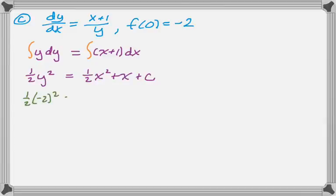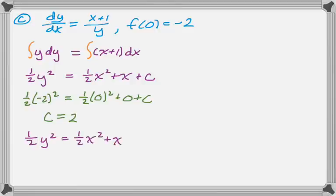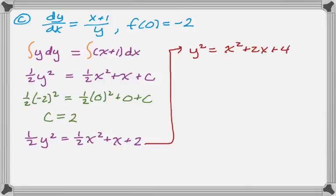I'm going to solve for c right now. So 1/2 times negative 2 squared, and then x is 0, which is nice. So that gives us c equals 2. Let's replace that. So we're just rewriting here. Now what I'm going to do is I'm going to clear out the denominator. So I'm going to multiply by 2 to get y squared equals x squared plus 2x plus 4.